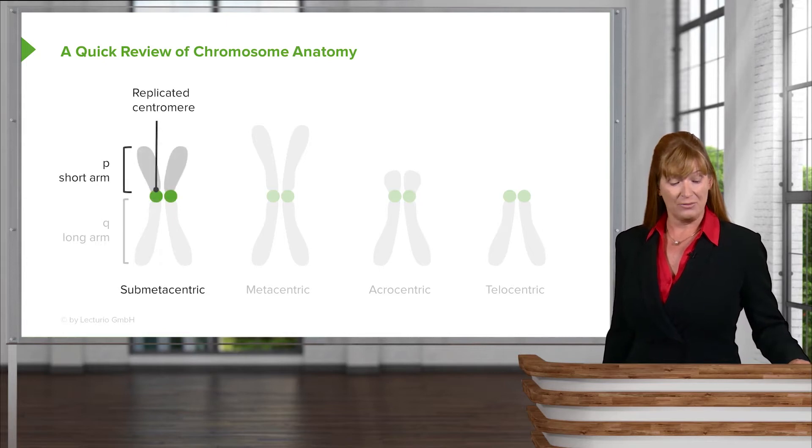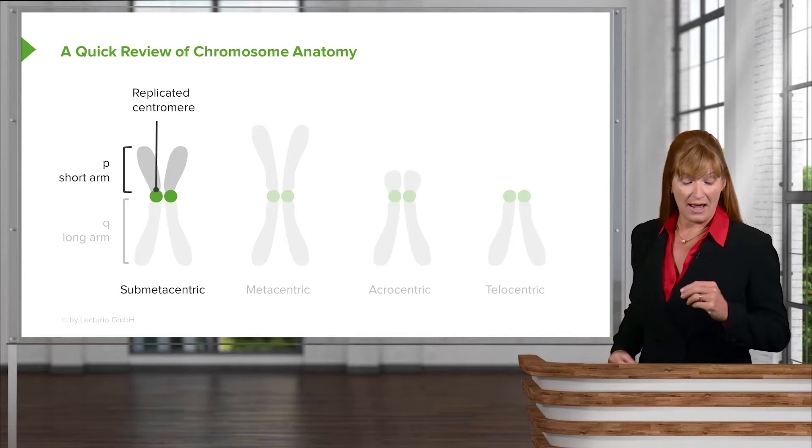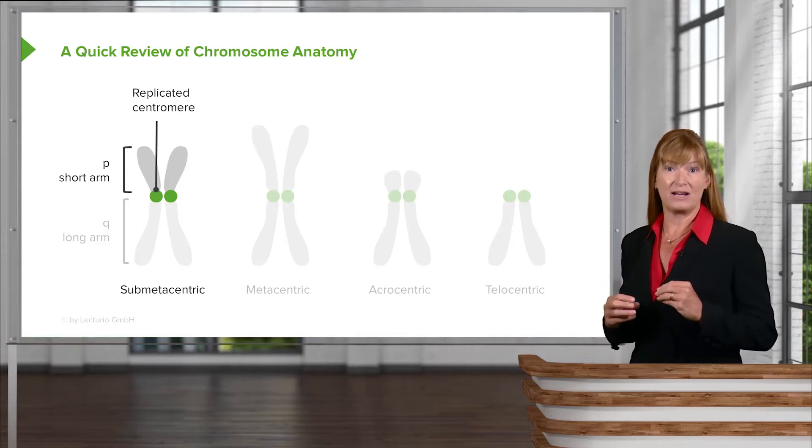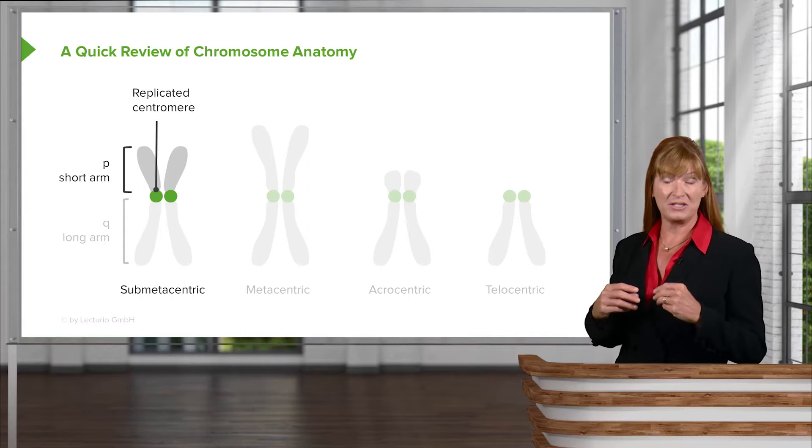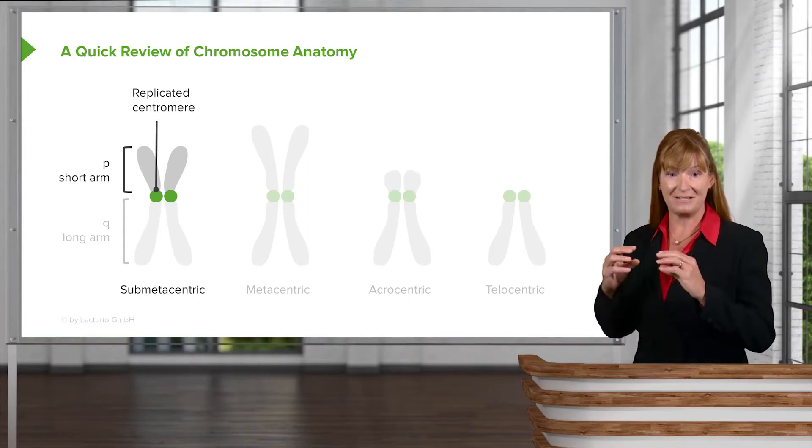So to start with, we speak about chromosomes based on the location of the centromeres. Here we have a submetacentric. Recall that meta means middle, and so a metacentric chromosome has the centromeres right in the middle.